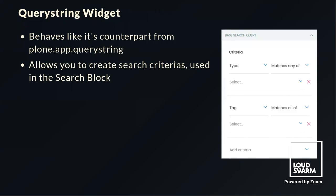Next let's talk about the Query String Widget. It is modeled after and behaves like its counterpart from plone.app.querystring. It allows creating search criterias and is used in the search block by the facet objects which are then used to filter the search results.